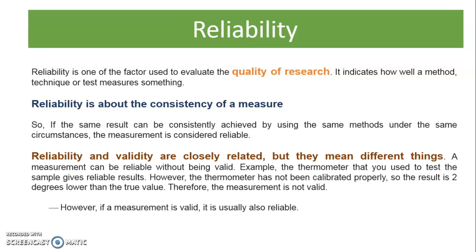Reliability is about the consistency of a measure. Consistency means that if the same results can be obtained using the same method under the same circumstances, then we say that the measurement is reliable. Reliability and validity are the two most important concepts used to verify the quality of research, and both are closely related but mean different things.